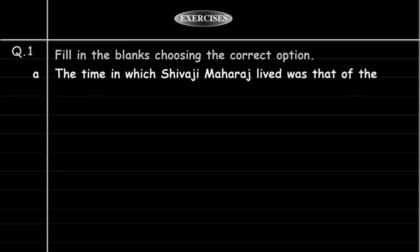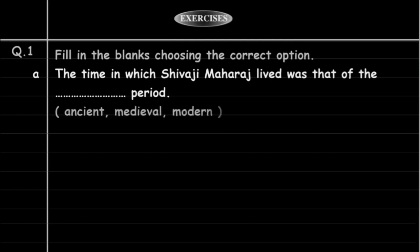Question 1: Fill in the blanks by choosing the correct option. A. The time in which Shivaji Maharaj lived was that of the blank period. The options are ancient, medieval, or modern. The correct answer is medieval.